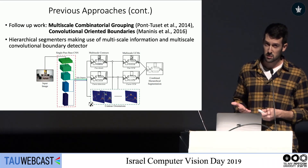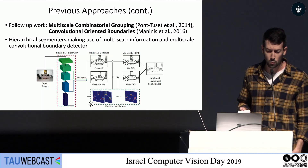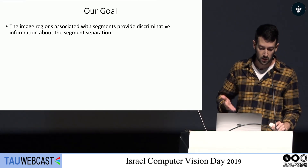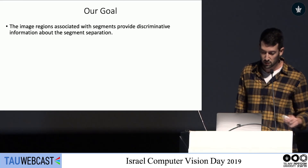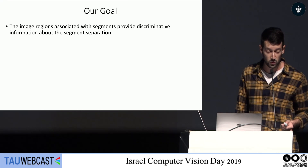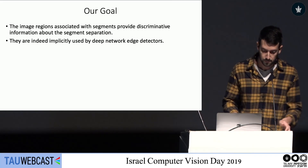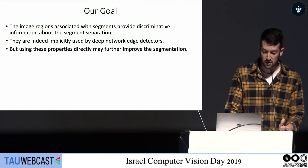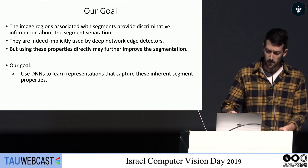We know that DNNs learn powerful representations, and we started asking ourselves: can we use that in the segmentation process more directly? The image regions associated with segments provide discriminative information about segment separation. There's a lot of information inside the image region we can use — like texture, color values, context within the segment, and context around the segment. We believe that using these properties directly can further improve the segmentation. Our goal is to use DNNs to learn representations that capture these inherent segment properties and combine them with edge detection.